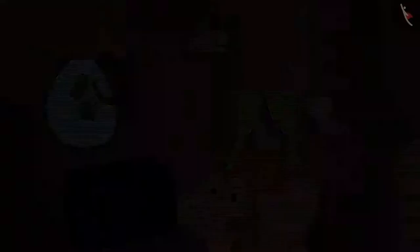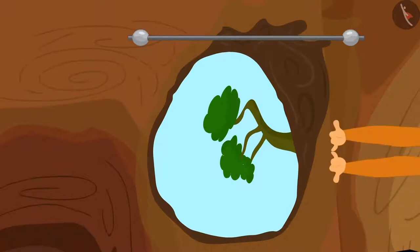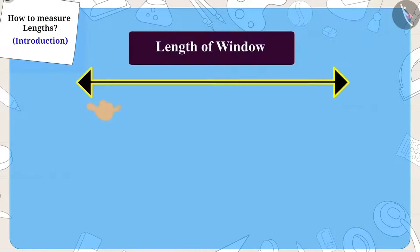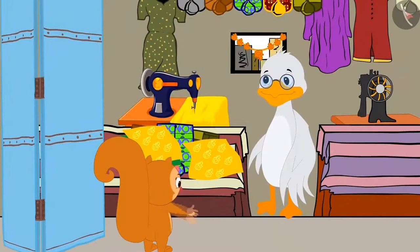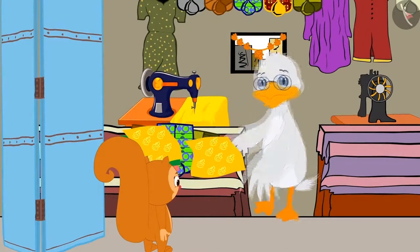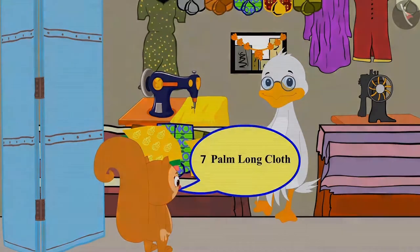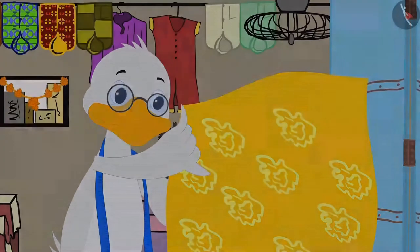Chanda thought of measuring the length of the window with her palm. She quickly measured the length of the window using her palms. The length of the window is equal to seven of Chanda's palms. Chanda reached uncle's shop all excited, chose a material of her choice, and asked uncle to give her a seven palm long cloth. Uncle immediately measured the seven palm long cloth and gave it to Chanda.